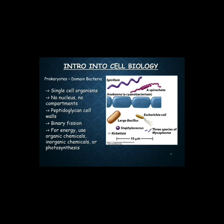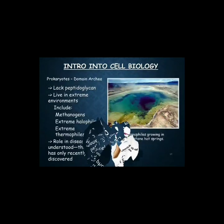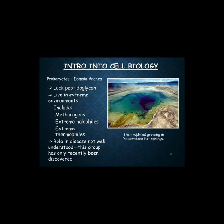Prokaryotic cells contain a single cell with no nucleus and no compartments. They have peptidoglycan cell walls and use binary fission. For energy they use organic chemicals, inorganic chemicals, or photosynthesis, as you can see in the picture.